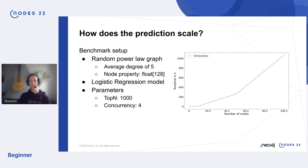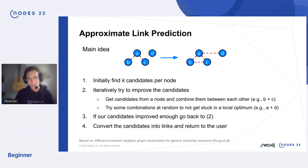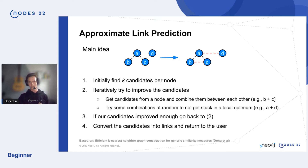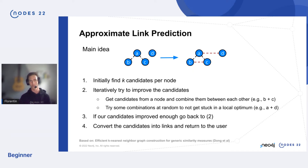In GDS we have a way to find predictions faster: approximate link prediction. The main idea is that if node A is likely to link with B or C, then B and C might also be good candidates to check against each other. To avoid getting stuck in a local optimum or just finding triangles, we also include some random predictions, like between A and D, to explore more of the search space.